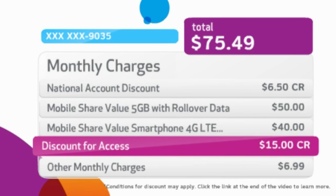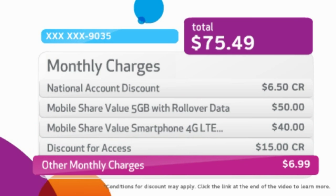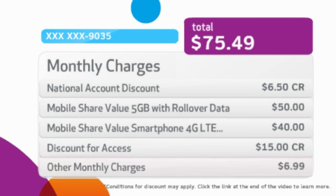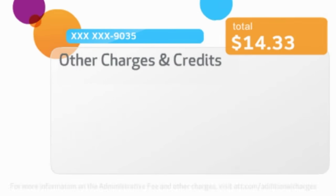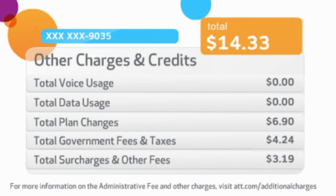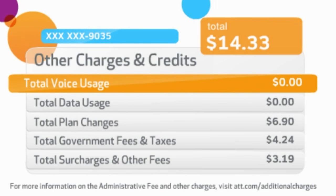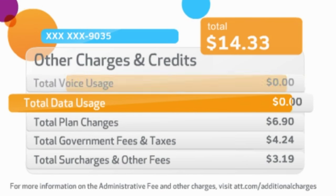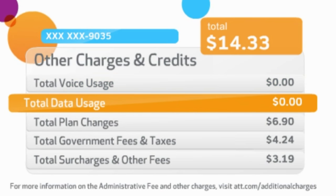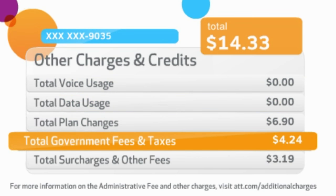It occurs because of agreements between your employer and AT&T. The second part is the other charges and credits section, where you'll find your voice usage summary, data usage summary, plan changes, taxes, and surcharges.